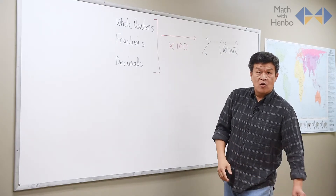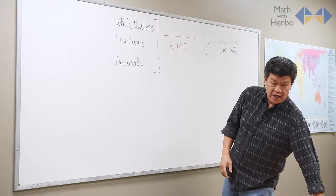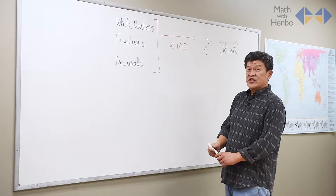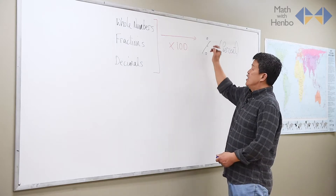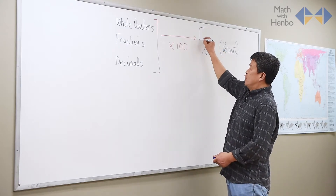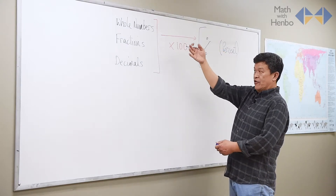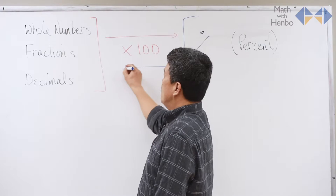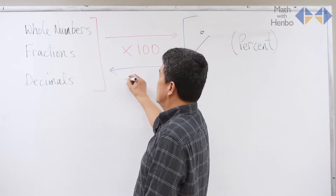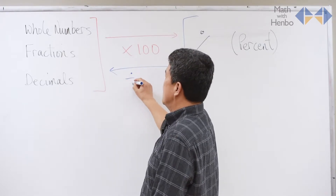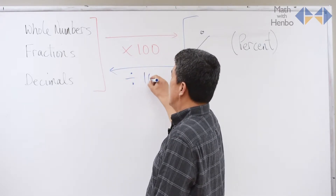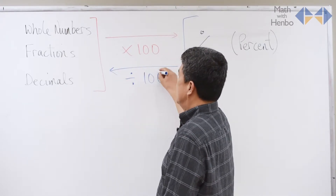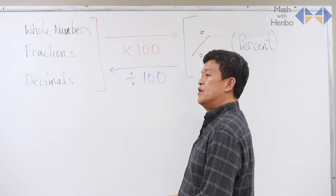But if you're going backwards, and you're given a percent and you're supposed to convert it into one of the three over there, just simply reverse the direction and change the sign to division — it's opposite. Divide by a hundred.